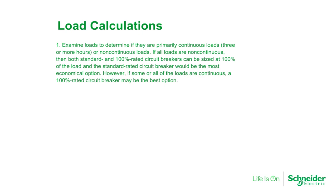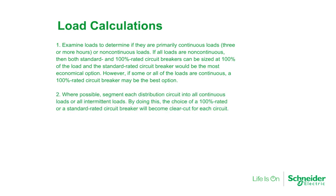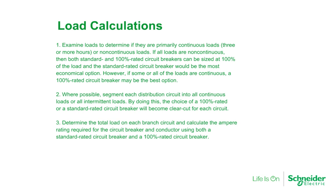However, if some or all of the loads are continuous, a 100% rated circuit breaker may be the best option. Where possible, segment each distribution circuit into all continuous loads or all intermittent loads. By doing this, the choice of a 100% rated circuit breaker or a standard rated circuit breaker will become clear-cut for each circuit. Determine the total load on each branch circuit and calculate the ampere rating required for the circuit breaker and conductor using both a standard rated breaker and a 100% rated circuit breaker.